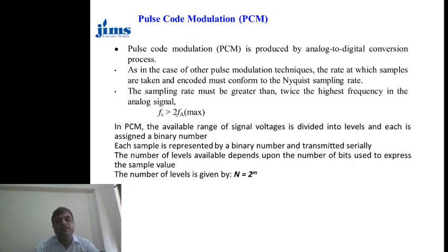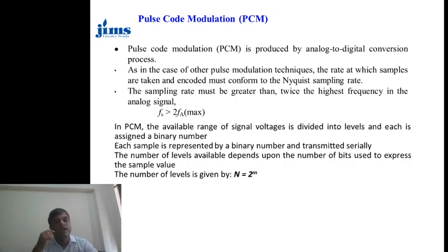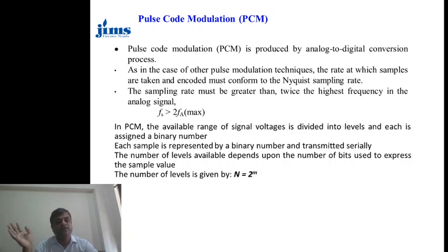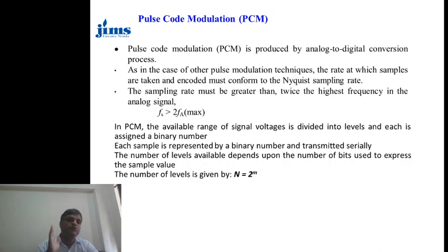The number of levels is given by N, where N equals 2 to the power M. So, PCM is used for conversion of an analog signal into a digital signal. As per the Nyquist sampling rate, if the sampling rate is greater than twice the highest frequency component of the signal, then we are able to reconstruct the signal from its samples — meaning we can convert a digital signal back into an analog signal.